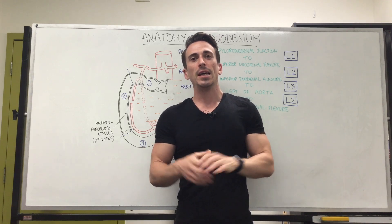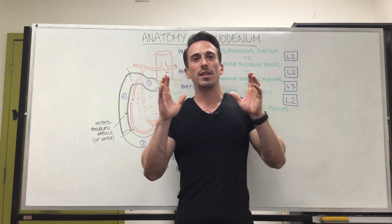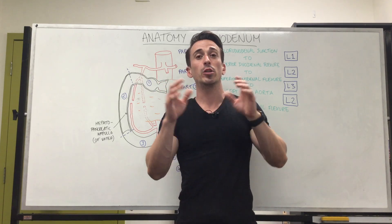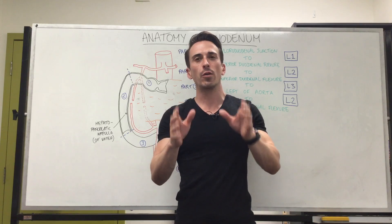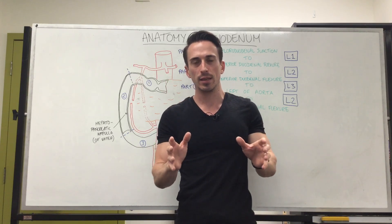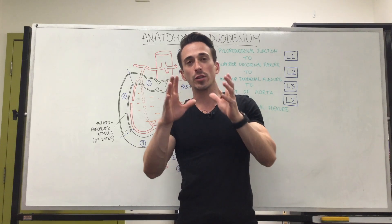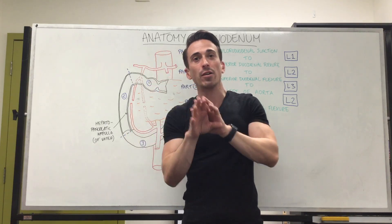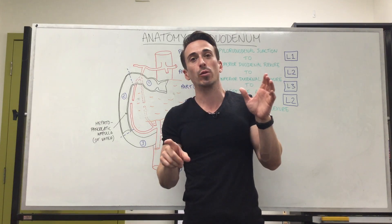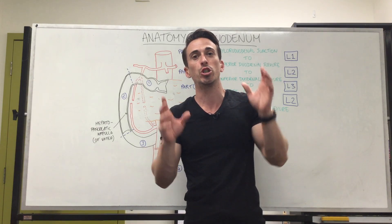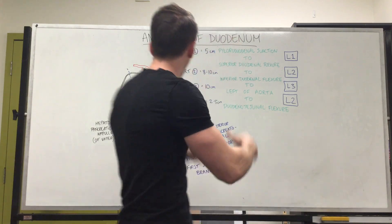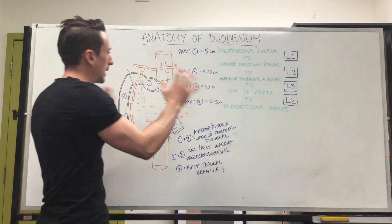Hi everyone, Dr. Mike here. Let's take a look at the anatomy of the duodenum. Remember, the duodenum is the very first part of the small intestines, coming out of the stomach, and then it goes to the second part of the small intestines called the jejunum.